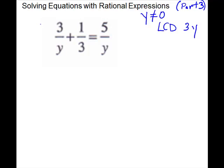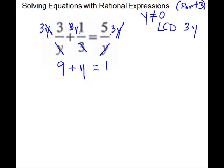We're going to multiply every term on both sides by 3y, using it on the numerator so all denominators will cancel. Our y cancels on the first term — 3 times 3 is 9. The 3 cancels on the next term, giving y times 1 which is y. On the other side, y cancels, leaving 3 times 5 which is 15. Now we have a linear equation. Subtract 9 from both sides and we get y equals 6. We threw away 0, not 6, so 6 is our solution.